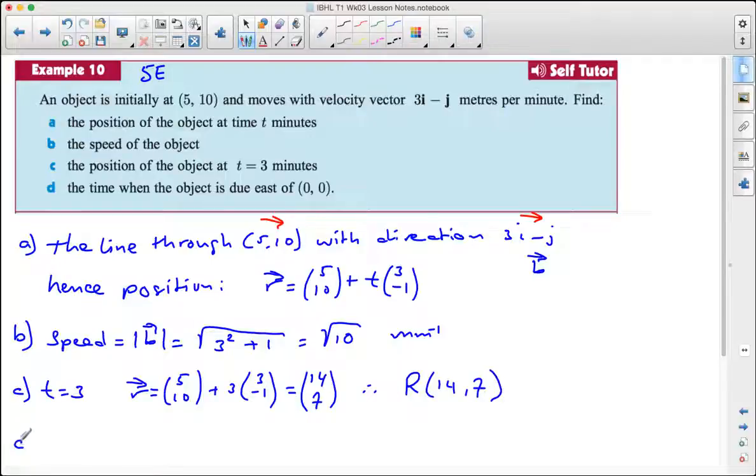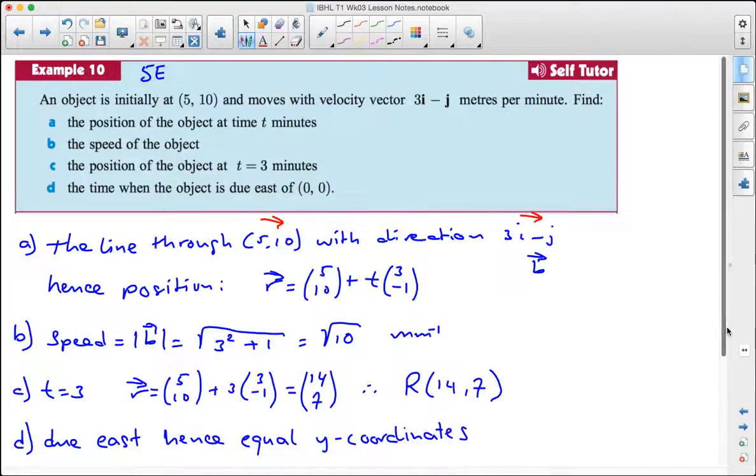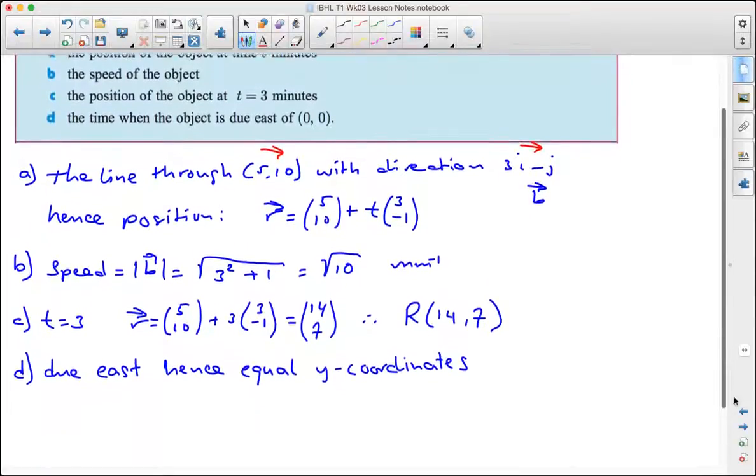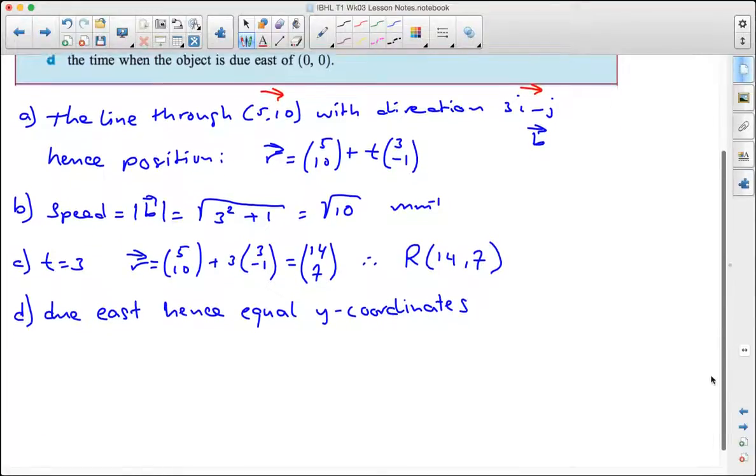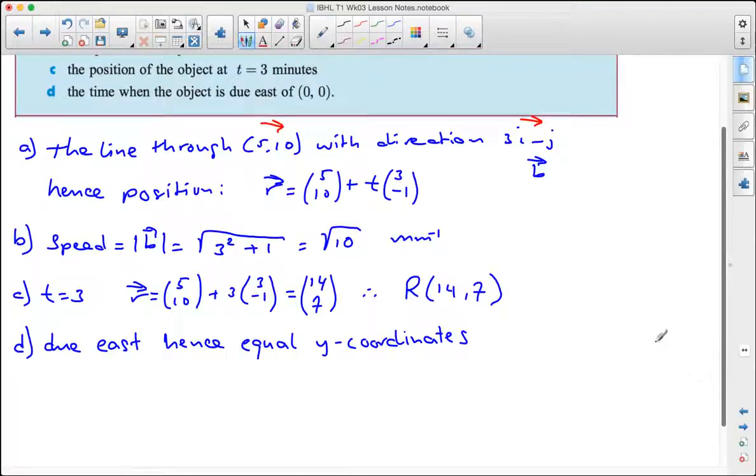The last bit, due east. That means the y coordinates need to be equal. So the y coordinate of the position needs to be equal to the y coordinate of the point given, and the point given here is (0, 0).